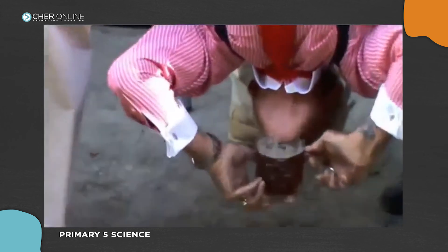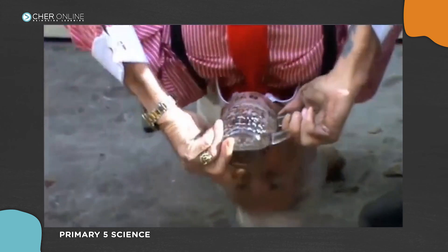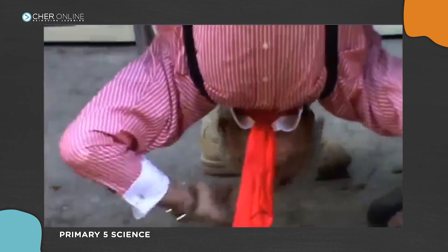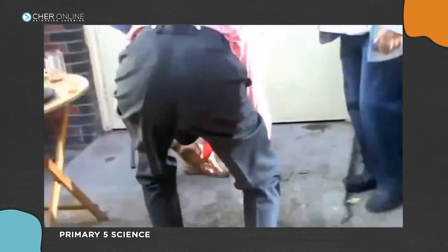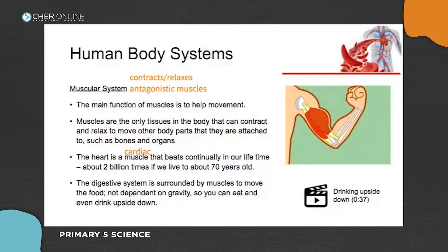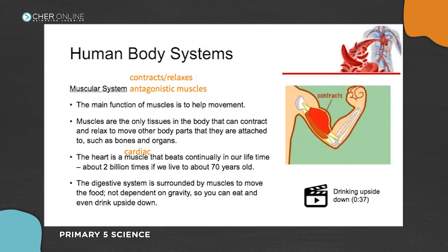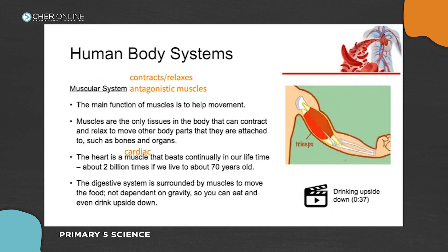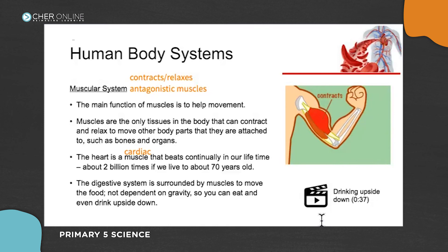It can be done upside down — and notice the liquid didn't come out from his nose. You can drink and eat upside down, and the main reason is that we have muscles in our gullet — called peristalsis — that push food down towards our stomach and all the way through until it reaches the rectum. You can try this at home, but not with beer!